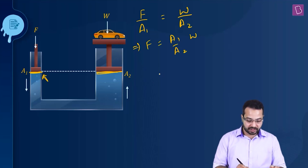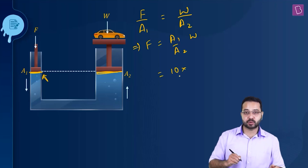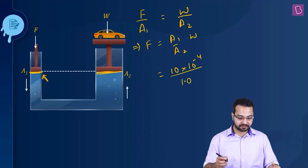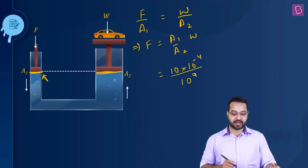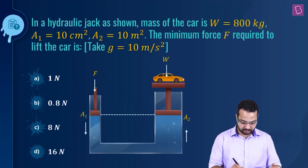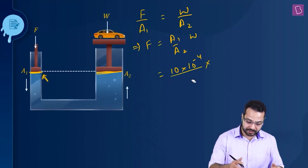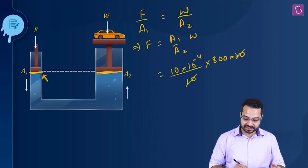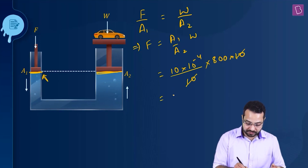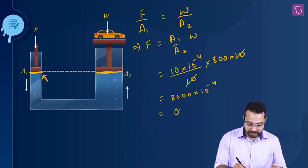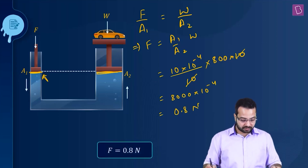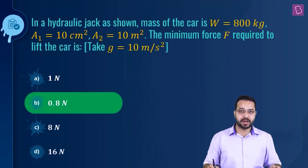Substituting values: A1 is 10 cm² = 10 × 10⁻⁴ m², A2 is 10 m². So F = (10 × 10⁻⁴ / 10) × (800 × 10). The 10s cancel, giving 8000 × 10⁻⁴ = 0.8 Newton. Option B is the correct answer.